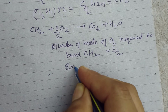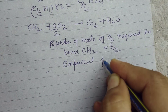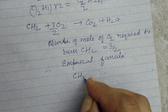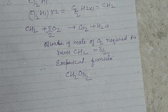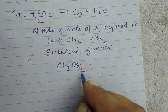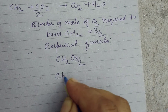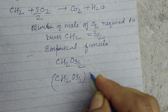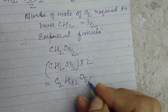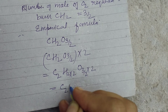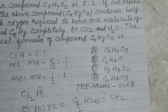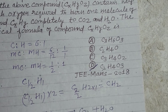Therefore the empirical formula is CH2O(3/2). To remove the fraction, we multiply by 2: CH2O(3/2) multiplied by 2 gives C2H4O3. So the formula is C2H4O3. Therefore the answer to this question is C2H4O3.